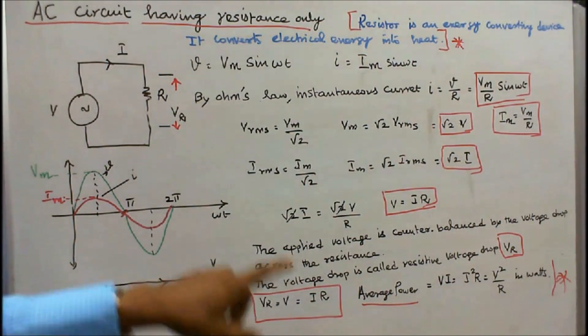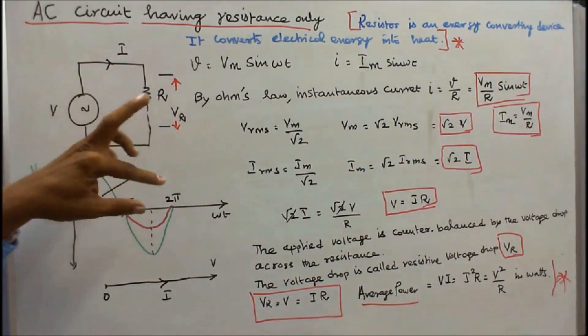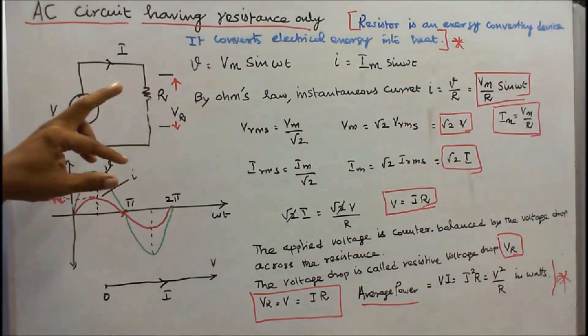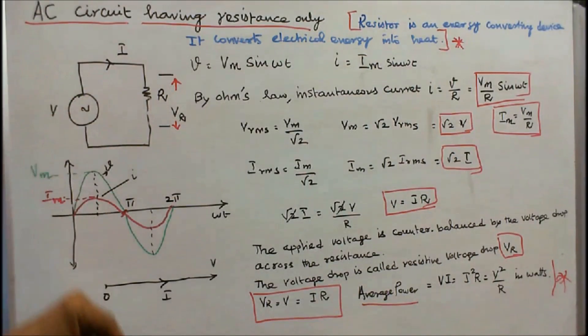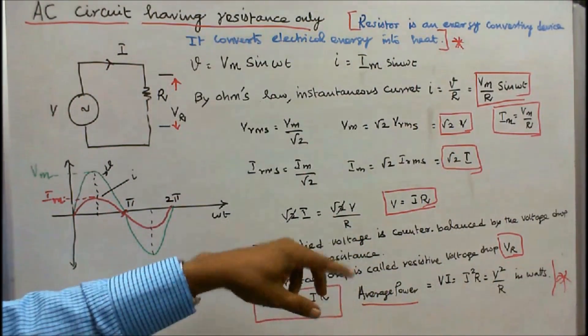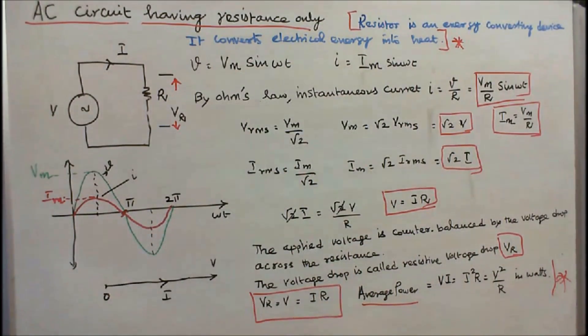Average power equals V_m × I_rms, which equals V × I, that is equal to I² × R, or V²/R, in watts.